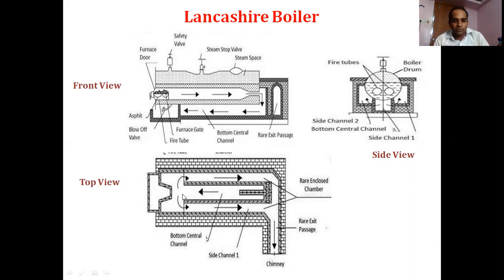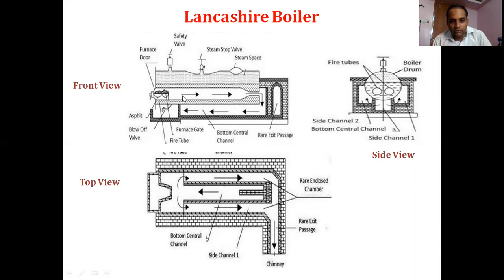In the top view, you can see the boiler shell, and the hot gases coming in this direction are deviated to the two sides, which you can also see in the side view. To draw the three views, start with the front view, take projections downward to draw the top view, and projections to the outside will give you the side view.